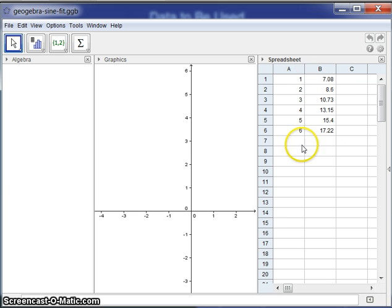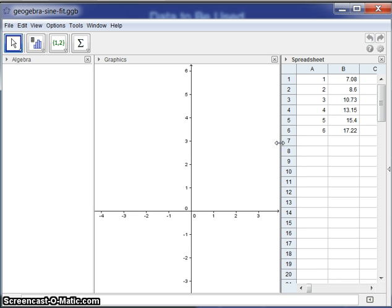Now to save a little time, I have already entered half the data into the spreadsheet view, and we might even want to shrink this a little bit. We are only going to use those two columns. And now what we do is fill in the rest of the data.